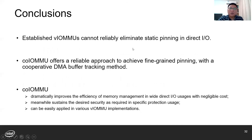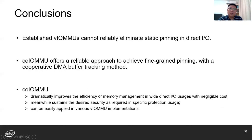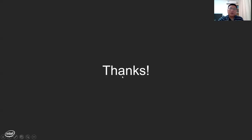In conclusion, current VIOMMUs cannot reliably eliminate static pinning in DirectIO, while CoLMMU offers a reliable approach to achieve fine-grained pinning with a cooperative DMA buffer tracking method. It dramatically improves the efficiency of memory management with negligible cost, while sustaining the desired security requirements in different protection scenarios. We also believe CoLMMU can easily be applied in various VIOMMU implementations. Please feel free to email us for any questions about CoLMMU. Thank you for listening.